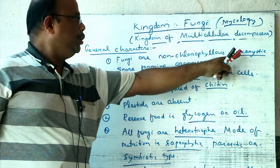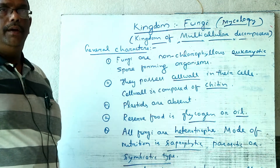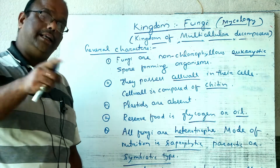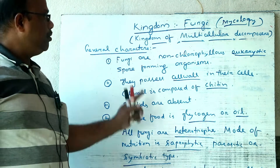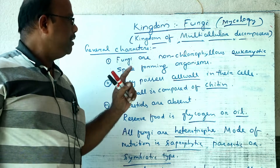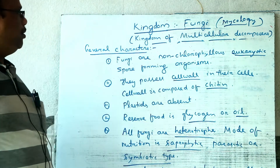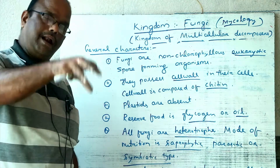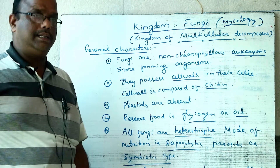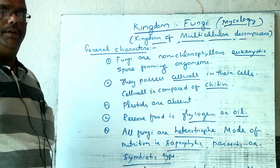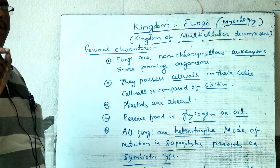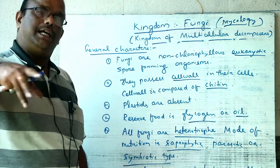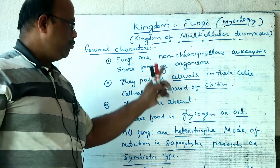All fungi are placed in Kingdom Fungi. Fungi are non-chlorophyllous, eukaryotic, spore-forming organisms. A spore is the asexual reproductive cell which directly germinates to form a new organism. Fungi are plant-like organisms which form spores just like plants, but have no chlorophyll pigments. Fungi are heterotrophic in nature.